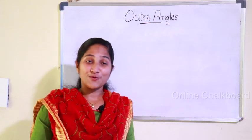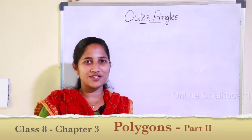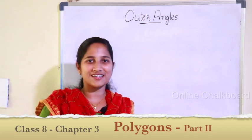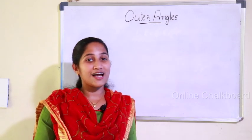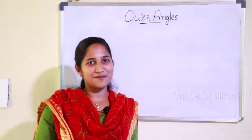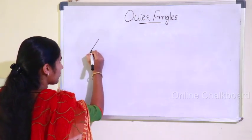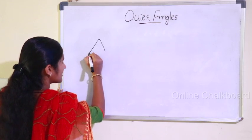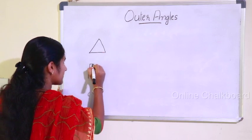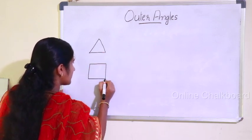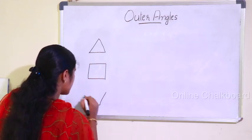When we talk about polygons, in the past video, if we talk about polygons: 3 sides and 3 angles is a Triangle, 4 sides and 4 angles is a Quadrilateral, and 5 sides and 5 angles is a Pentagon.